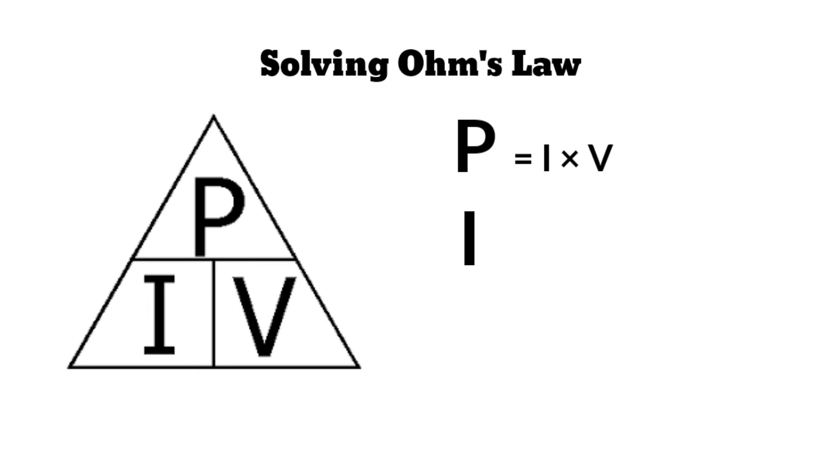If you are looking for current or ampere, cover the I or current in a triangle, leaving P or power divided by V or voltage equals I or current.